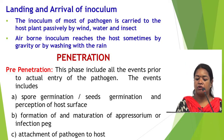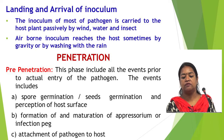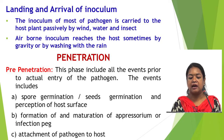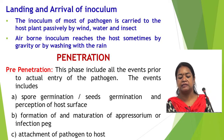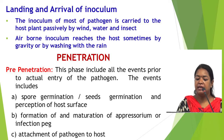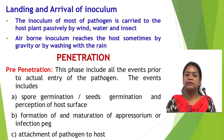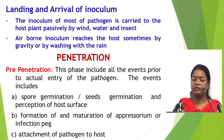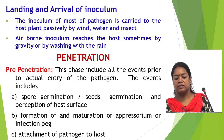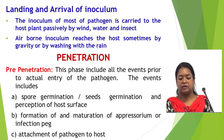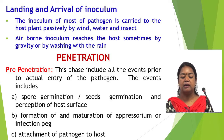The second phase of the disease cycle is penetration. In penetration, three important phases are pre-penetration, penetration, and post-penetration. In pre-penetration, the phase includes all events prior to the actual entry of the pathogen. These events include spore germination, seed germination, perception of the host surface, formation or maturation of the appressorium or infection peg, and attachment of the pathogen to the host.